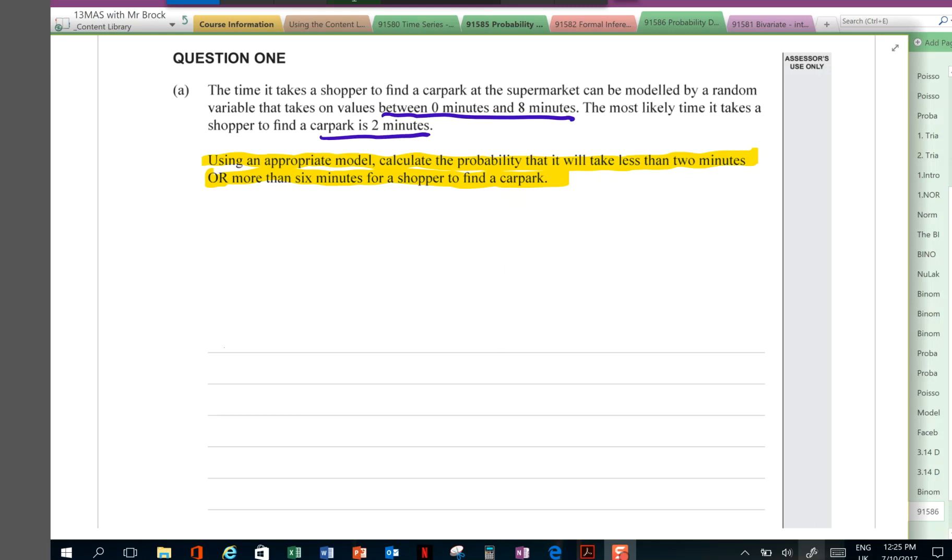So, we've got a minimum, a maximum, and most likely. Which distribution has those three features to it? The model that we usually use for that is the triangular distribution model in this course. Easy to remember because a triangle has three points, and we're given three pieces of information: minimum, maximum, and mode. So let's draw it.